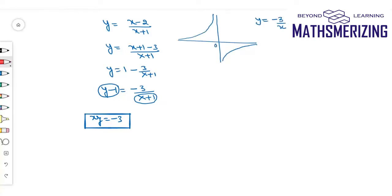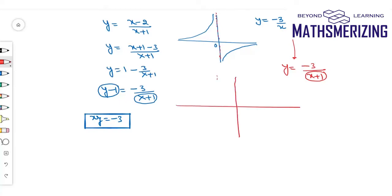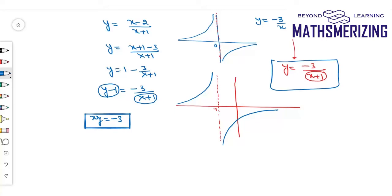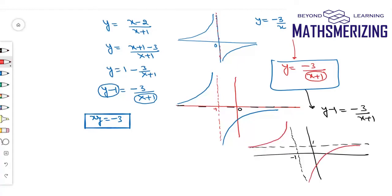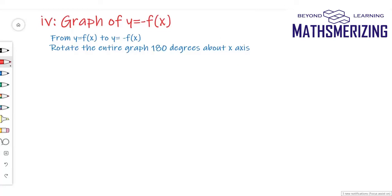From that graph, I'll first draw the graph of y equals −3/(x+1). It's a transformation of x, so I'll shift the entire graph minus 1 unit along the x-axis. Previously the asymptote was at 0; now this asymptote will be at −1. Then from this graph, I'll draw y − 1 equals −3/(x+1) by shifting the graph plus 1 unit along the y-axis. That's the graph of y equals (x−2)/(x+1).